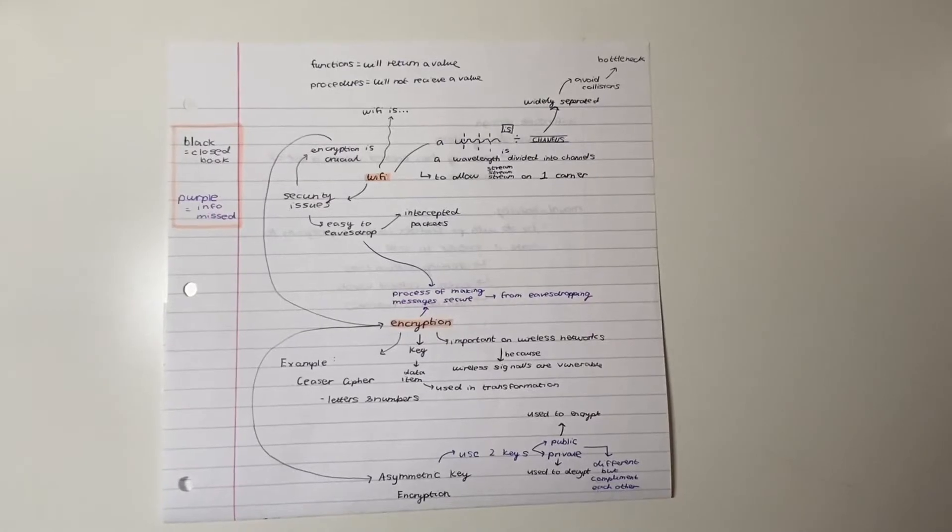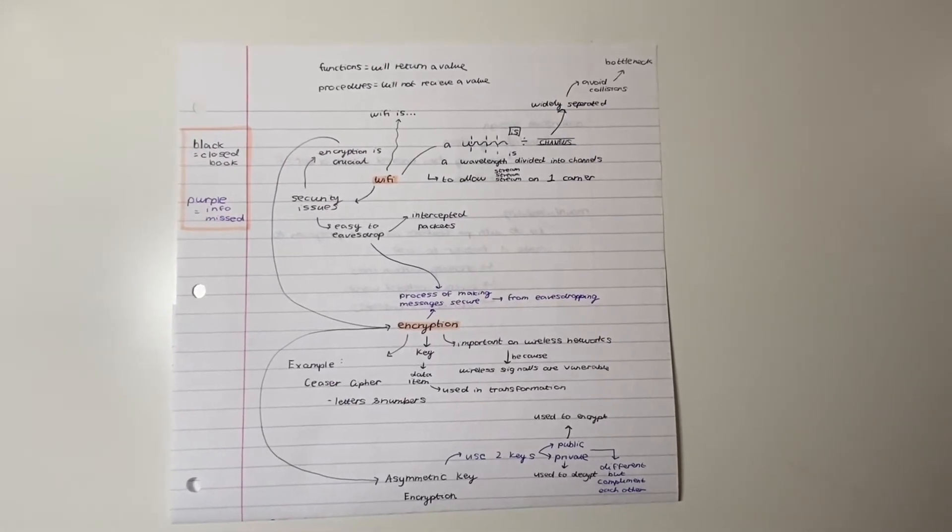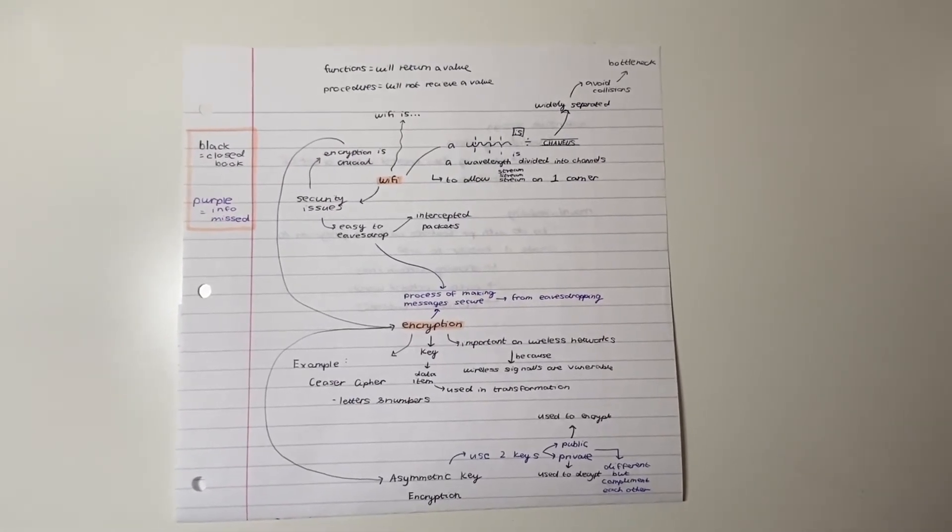Tip number five is for closer to the exam. In the nights or weeks before your exam, take a blank piece of paper and write down everything you know about a certain topic. Then in a different colour pen, go back and write the bits of information that you've missed, so you can focus on those bits when you're revising.